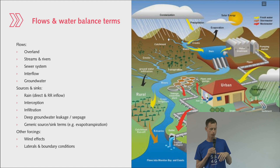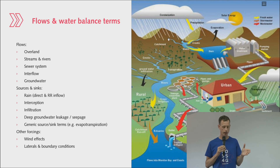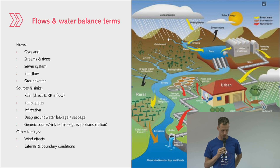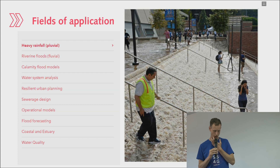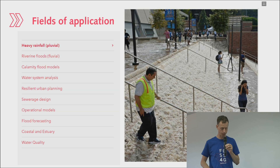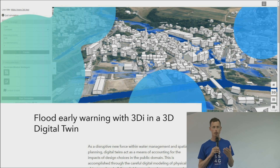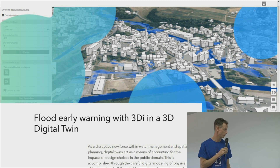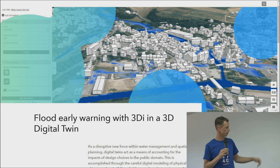3Di allows you to simulate flow basically following water everywhere it goes — overland flow, streams and rivers, urban water management, sewer systems, and groundwater. It can be used for many different applications such as heavy rainfall flooding, coastal flooding, or urban planning. One key aspect is that you can integrate it into other software solutions, for example 3D digital twins, via an API.